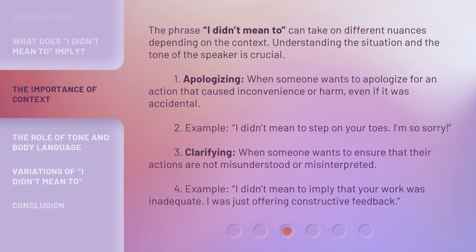The phrase 'I didn't mean to' can take on different nuances depending on the context. Understanding the situation and the tone of the speaker is crucial. First, apologizing: when someone wants to apologize for an action that caused inconvenience or harm, even if it was accidental. Example: 'I didn't mean to step on your toes. I'm so sorry.' Second, clarifying: when someone wants to ensure that their actions are not misunderstood or misinterpreted. Example: 'I didn't mean to imply that your work was inadequate. I was just offering constructive feedback.'